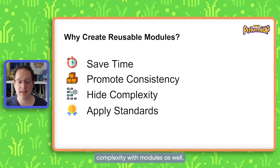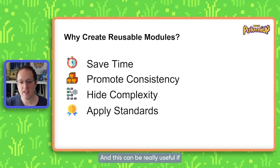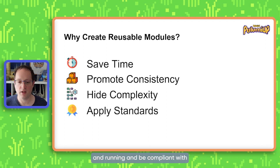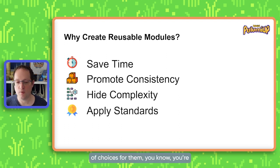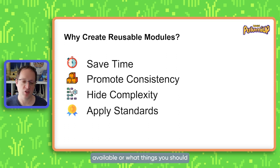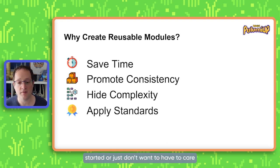Thirdly, we can look at hiding some complexity with modules. Modules allow us to present a simple interface to a complex problem. This can be really useful if you've got people who want to be able to deploy infrastructure but don't want to be the ones writing complex C# or TypeScript or whatever code you're going to use. They just want to be able to deploy a web application, get it configured and running, and be compliant with all the standards. If you create a module which makes a lot of choices for them, you're taking them down a path — saying this is how we deploy a web application, just give me a few parameters to vary it a little bit, and I'll take care of the rest.